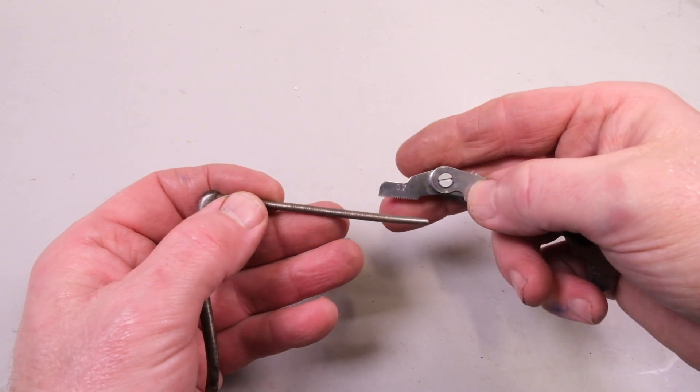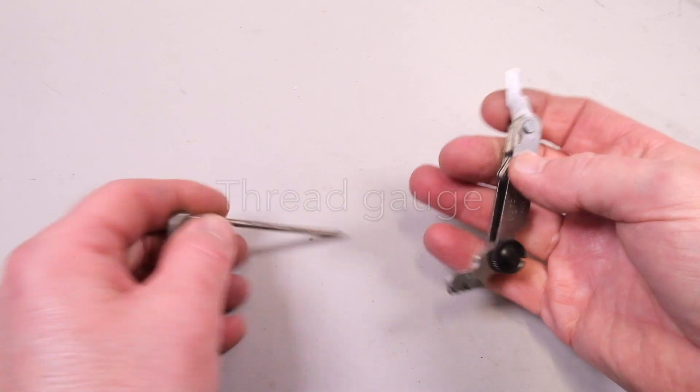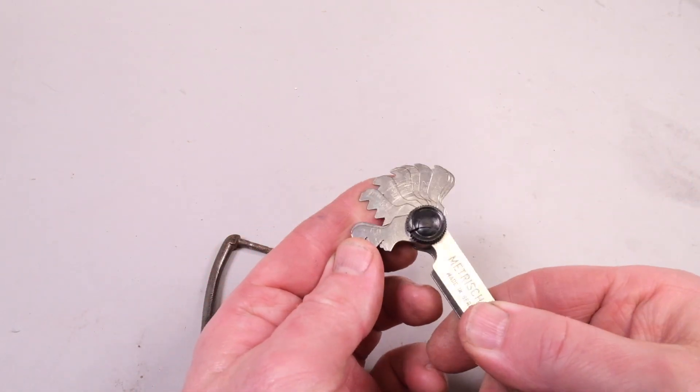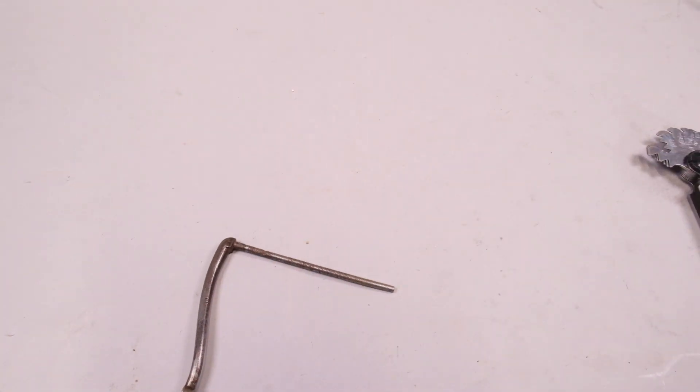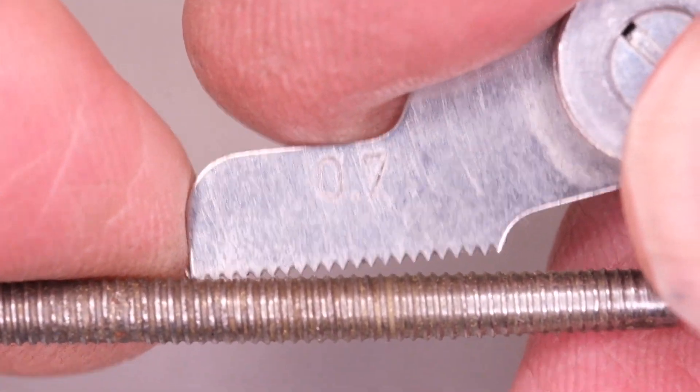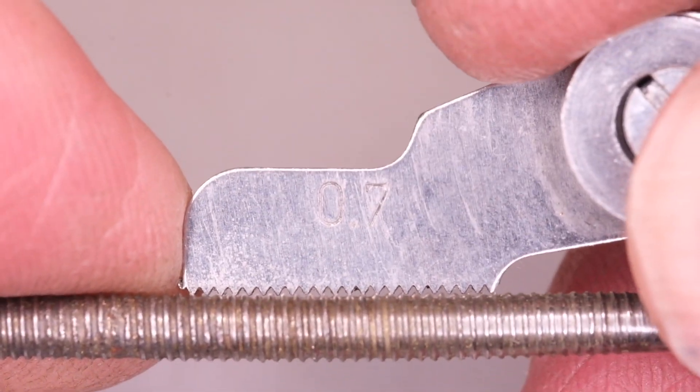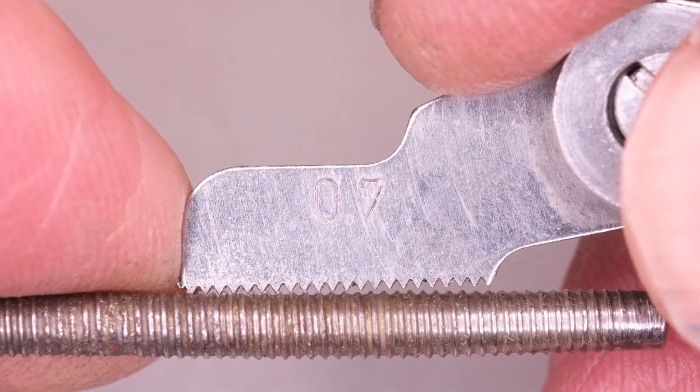So how do we measure pitch? Well there are a couple of ways you can do it. One is with a pitch gauge. This is just a modern gauge with various different pitches, a bit like a feeler gauge really, and you can see here we're using one that has a pitch of 0.7 millimeters so that's 0.7 of a millimeter from one root to the next.